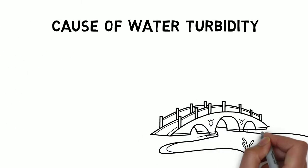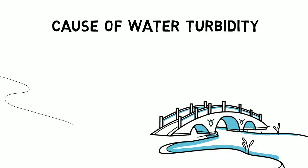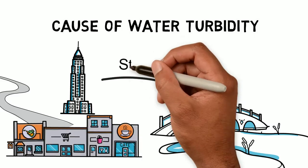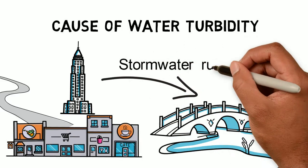Turbidity in rivers or lakes is often caused by human activities like construction, mining, and agriculture. Stormwater runoff after a rainfall can wash up sediments from urbanized areas, industries, and farmland.